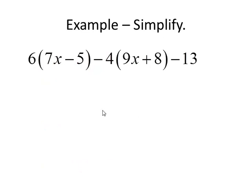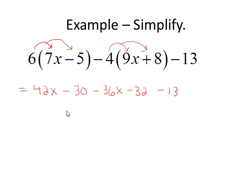Here's a pretty challenging example. This combines both the distributive property and combining like terms. We're going to distribute 6 and negative 4 first. And when we're done distributing, then we'll go ahead and combine like terms. 6 times 7x minus 6 times 5. Now distribute the negative 4. Negative 4 times 9x is negative 36x. And negative 4 times 8 is negative 32. Bring down the negative 13 and it's time to combine like terms. Two terms with x. 42 minus 36 gives me 6x. Then combining the three constant terms, the terms without variables. Combine those together and I get negative 75. So this simplifies to be 6x minus 75.